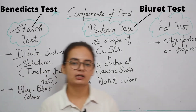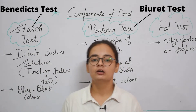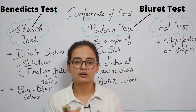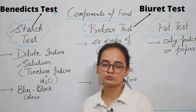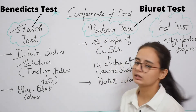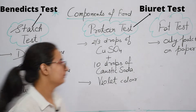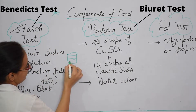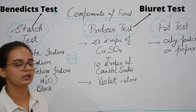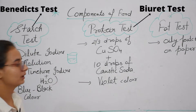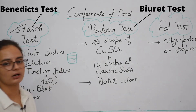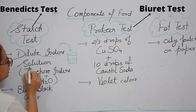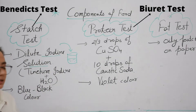For the starch test, we need to peel the potatoes and wash them in water, so the water becomes slightly whitish. We dip the potato in the water for a while and the color of the water will change. Then we take that water and add dilute iodine solution to it.